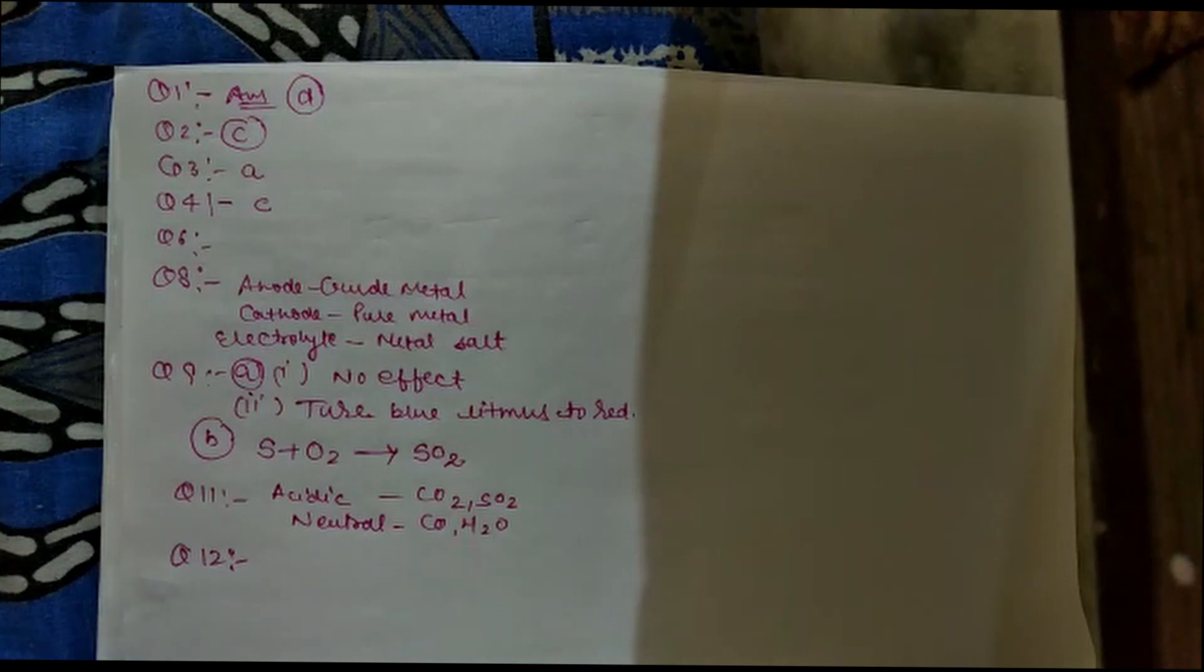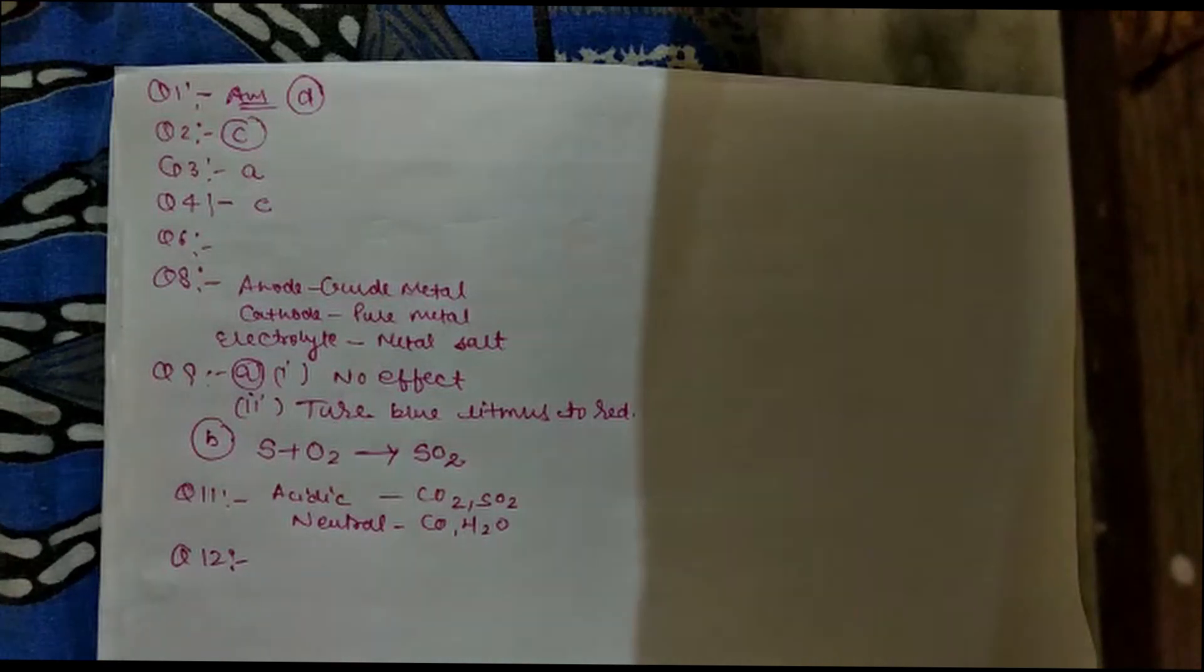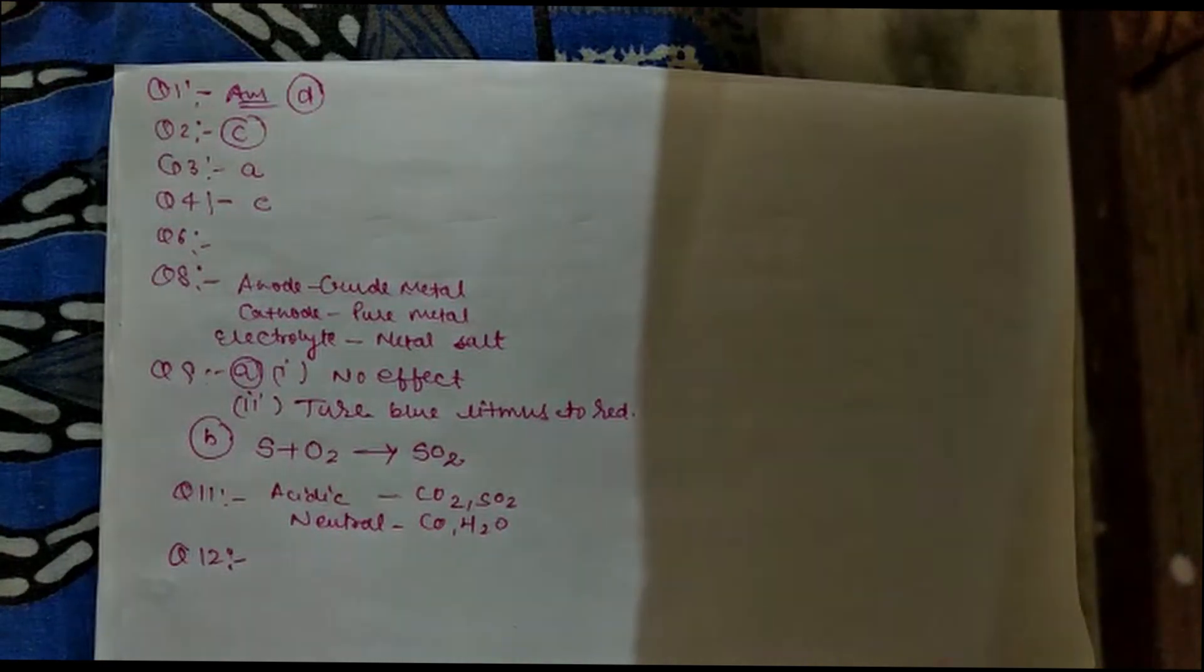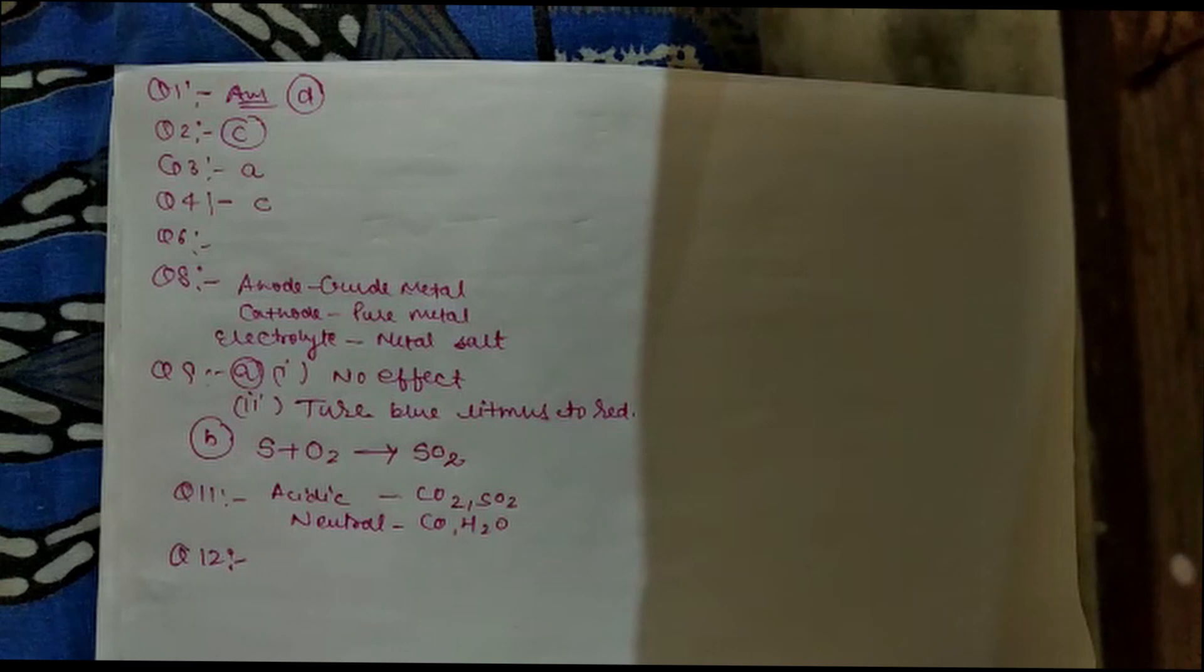Question 13: you must have seen tarnished copper vessels being cleaned with lemon or tamarind juice. Explain why these substances are effective in cleaning. If you see copper vessels some time after, there is a layer of blackish or greenish color. But when we apply lemon or tamarind juice, they are completely cleaned. The tarnished copper vessels are coated with basic copper carbonate. Therefore, these are neutralized by acidic lemon or tamarind, because metal oxides are basic in nature.